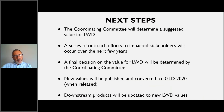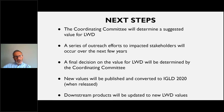Taking advantage of the planned IGLD update for all station elevations coming out in about five years, the Coordinating Committee is now considering whether to recommend any changes to the low-water datum. The next steps would be for the Coordinating Committee to put forward suggested values for low-water datums for each lake. This will be followed up by outreach to impacted stakeholders over the next few years to determine how such a change would affect their interests. A final decision on making any changes to the low-water datums will be determined by the Coordinating Committee. New values would then be published and converted to IGLD 2020 when it is released, and downstream products will be updated to the new low-water datum values.